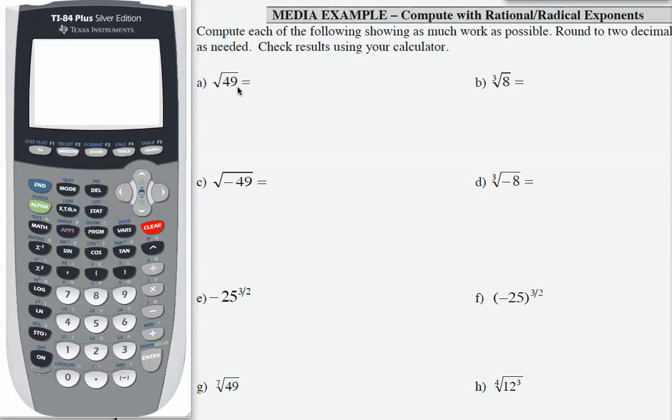Part A is the square root of 49. So we are looking for the number multiplied times itself that gives us 49. That number is 7.